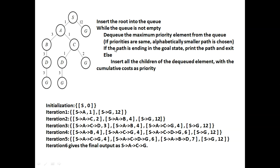S is not the goal state, so we move to the else part, which inserts all children of the dequeued element. S's children are A and G — A has path cost 1 and G has path cost 12 — so they are both inserted into the priority queue. After this first iteration, the queue contains S→A with path cost 1 and S→G with path cost 12.